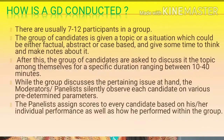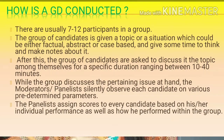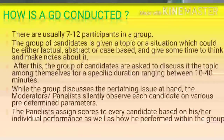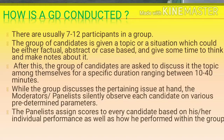After this, the group of candidates are asked to discuss the topic among themselves for a specific duration ranging from 10 to 40 minutes. The group members are asked to interact within the group regarding the given topic. While the group discusses the pertaining issue, the moderators or panelists silently observe each candidate on various predetermined parameters, and they assign scores to every candidate based on his or her individual performance as well as how he performed within the group.